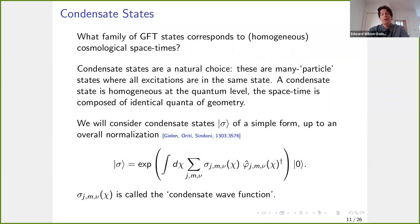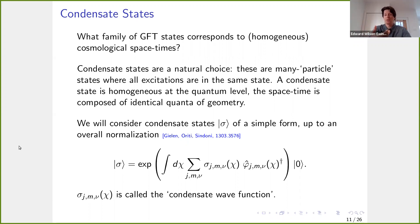We'll consider a relatively simple form of condensate states: you take the exponential of the creation operator and act on the Fock vacuum, with some weighting sigma of the creation operator within the exponential. This sigma is known as the condensate wave function. You just exponentiate the creation operator weighted by some condensate wave function, and that's your condensate state. I've dropped the overall normalization, which is just a numerical prefactor that isn't important for what follows.